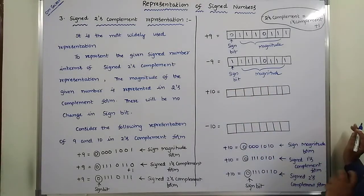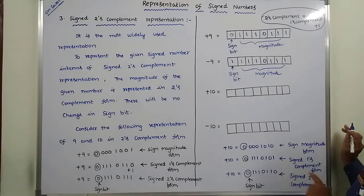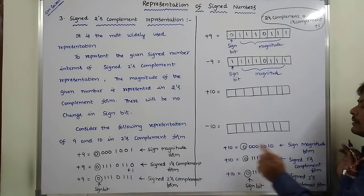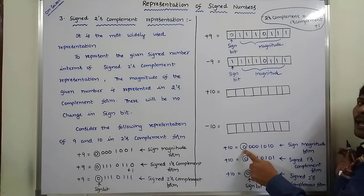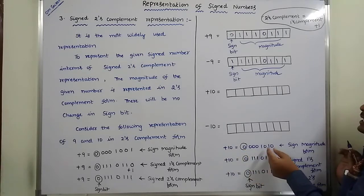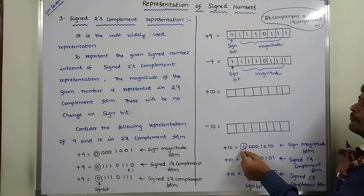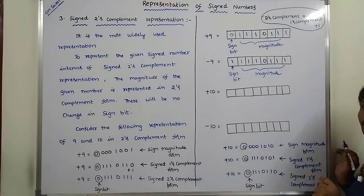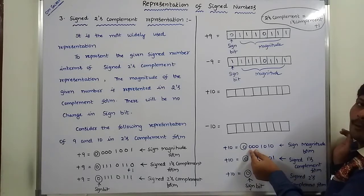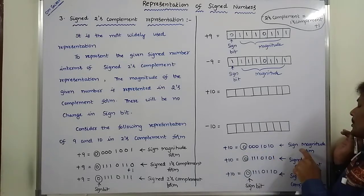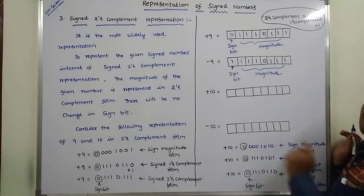Next, represent 10 in sign magnitude form, signed one's complement form, and signed two's complement form. The binary form of 10 is 1010. Since it has a plus symbol, we put 0 at the MSB position as the sign bit. There are 4 bits of magnitude plus 1 sign bit, totaling 5 bits. In an 8-bit register, the remaining 3 bits are filled with zeros. This is the signed magnitude representation of plus 10.